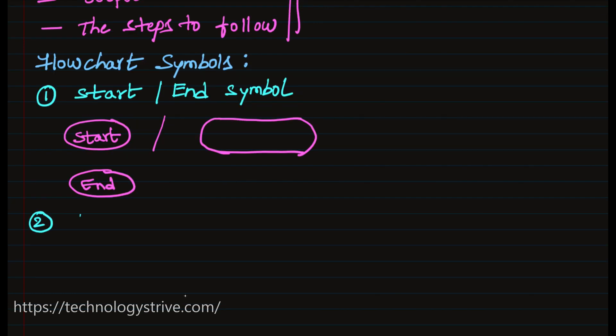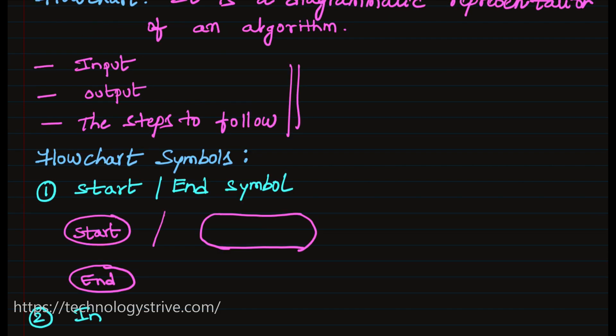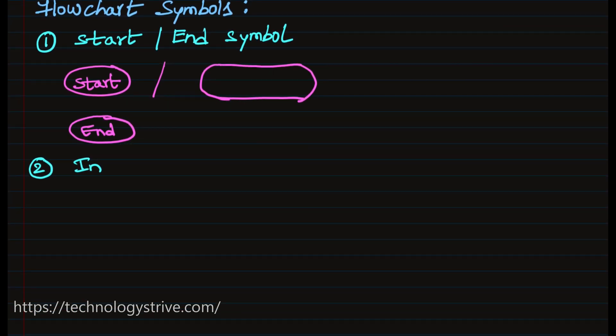Second one is the input or output symbol. Every algorithm either takes zero or more inputs and at the same time it will produce at least one output. Let's see what symbol is being used for input or output. Because it deals with data, it is also known as data symbol. The symbol used is parallelogram, and we will write input variables or whatever output is produced by the algorithm.